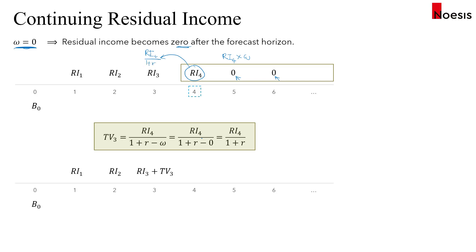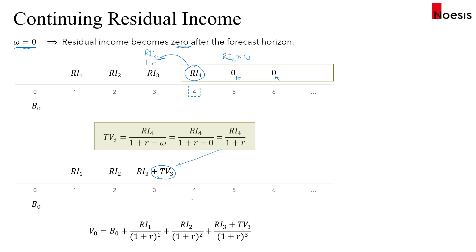So that would be our terminal value in period three. We calculate the present value of all the residual income and the terminal value, discount them back, and add it to the book value per share to get the intrinsic value per share.